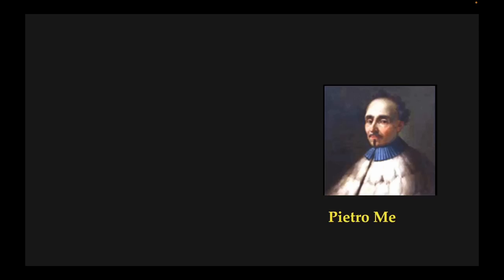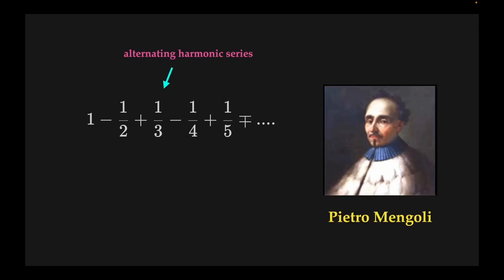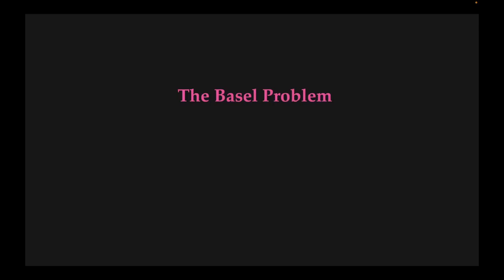It all starts in the 1600s with the Italian mathematician Pietro Mengoli, who was very much into the research of infinite series. He found out that the alternating harmonic series has the value the natural log of 2. And in 1650 he proposed the famously known Basel problem: what is the value we get if we sum up the squared inverse natural numbers — 1 plus 1/4 plus 1/9 plus 1/16 and so on — up to infinity.